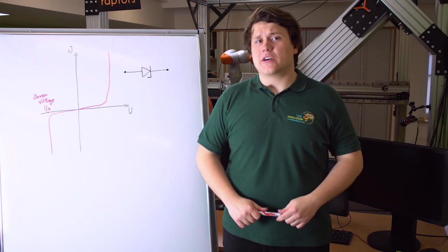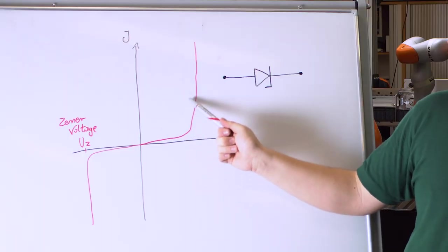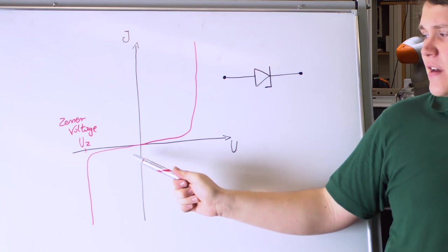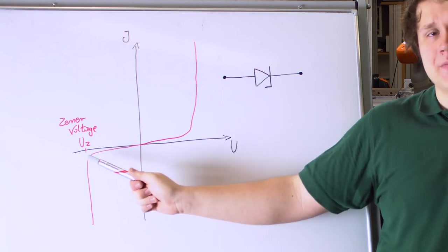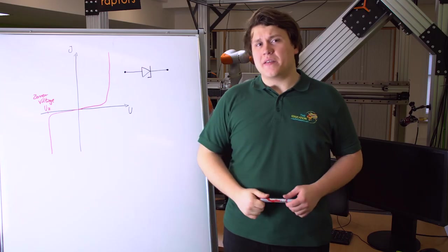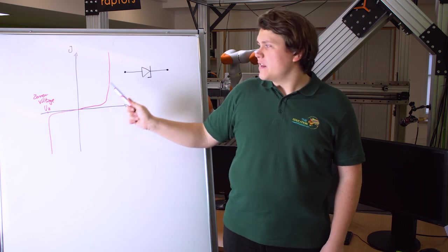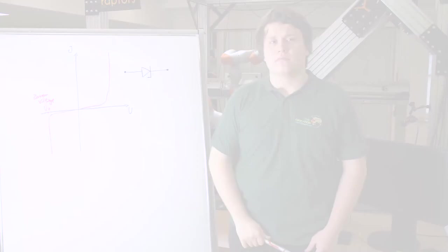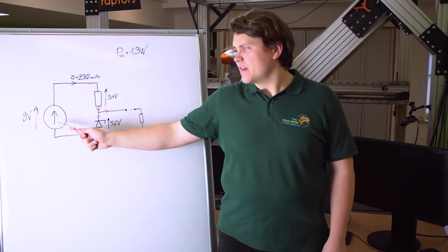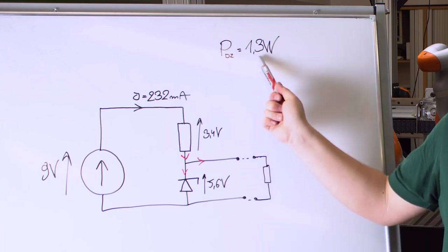Zener diodes are stabilizing diodes. In the direction of conductivity they behave as a normal rectifying diode, but in the opposite direction they have a carefully selected breakdown voltage — this is a normal operating state for them. They have two basic parameters: the Zener voltage, which is the breakdown voltage, and the maximum power that can flow through the diode. In this example we will use a 9 volt supply and a Zener diode rated for 5.6 volts and 1.3 watts.